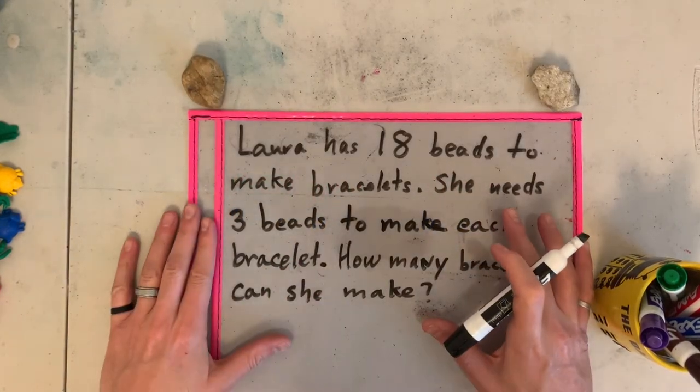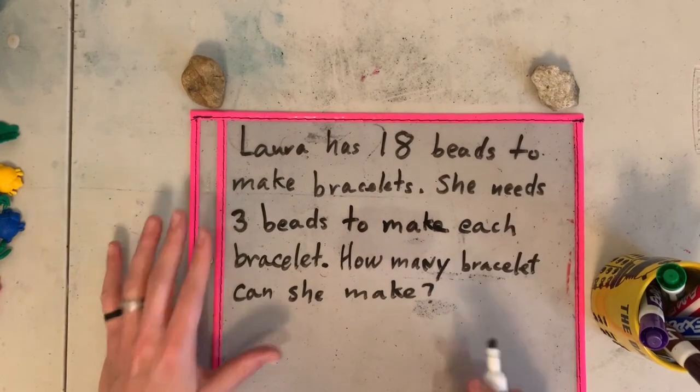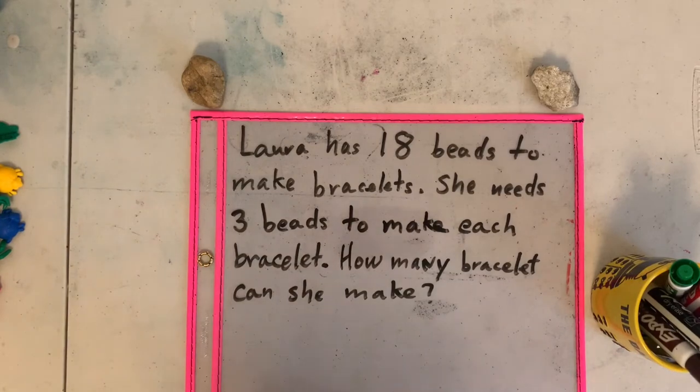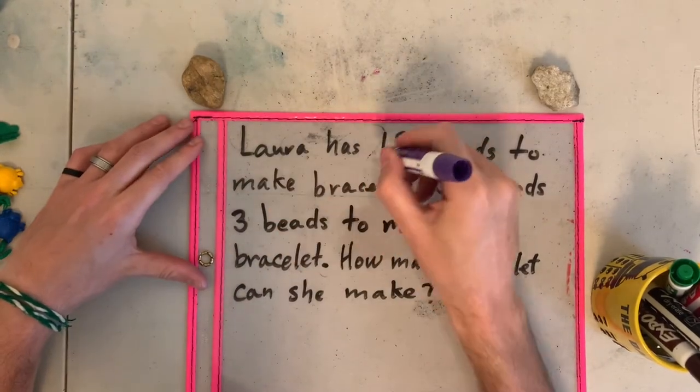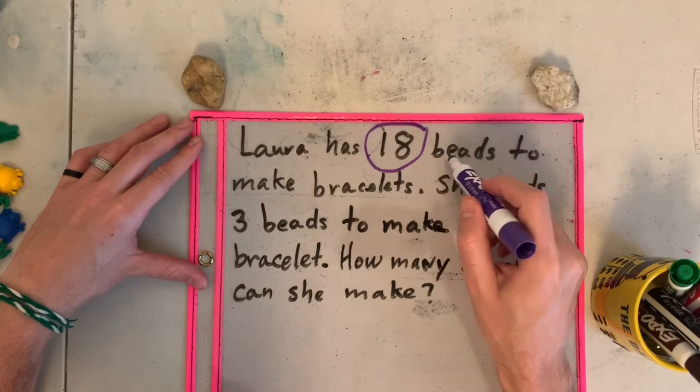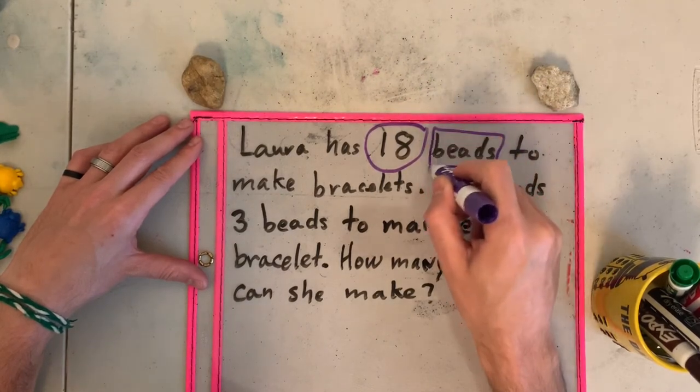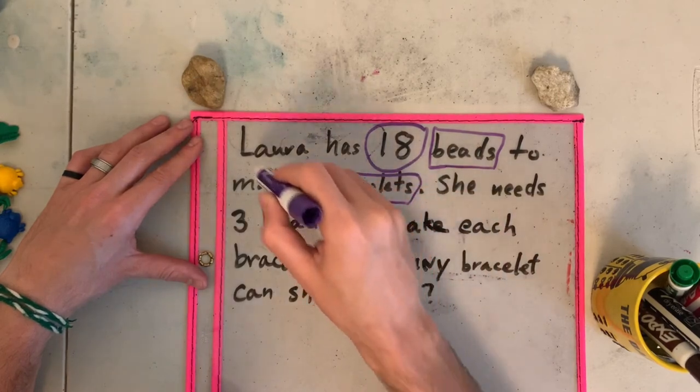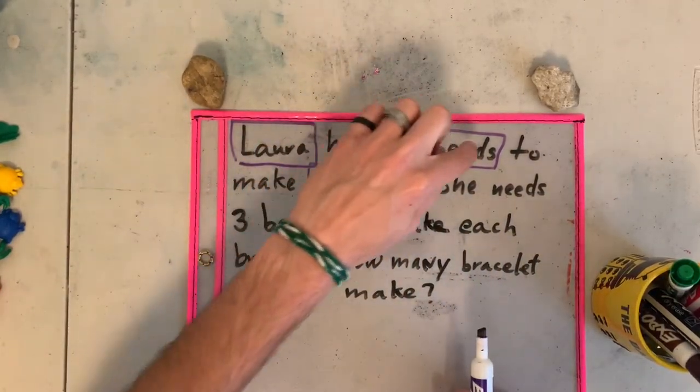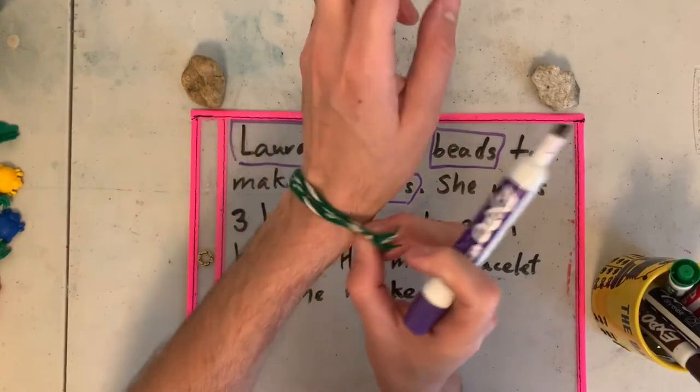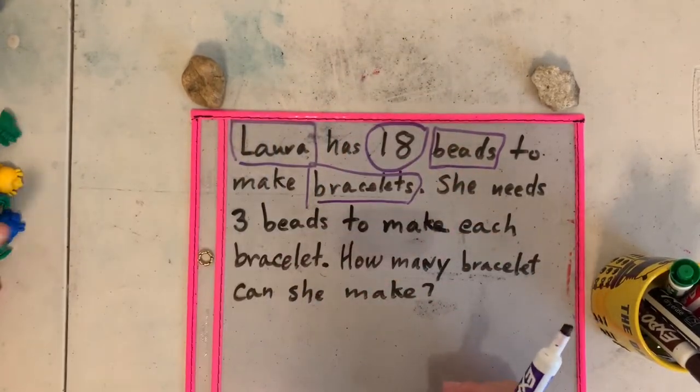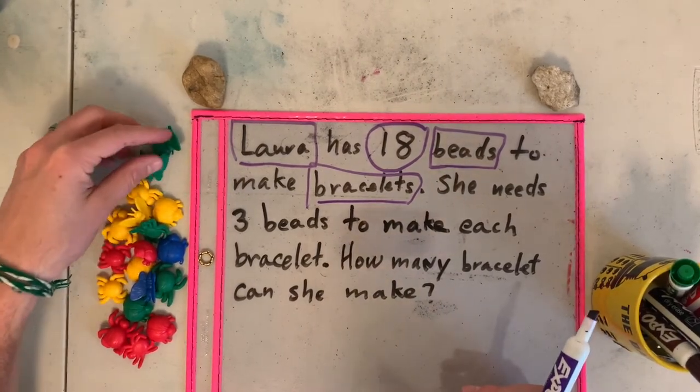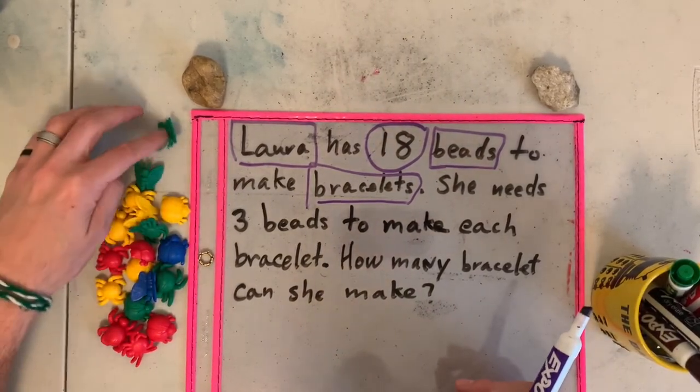This is the word problem for today. I'm going to read it, and while I'm reading it, I'm going to be doing cues. So let's start now. Laura has 18 beads to make bracelets. So we're talking about Laura, and Laura has 18 beads to make bracelets. Remember about the bracelets from last week? All of these toys represent a bead.